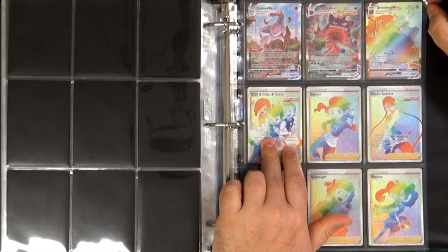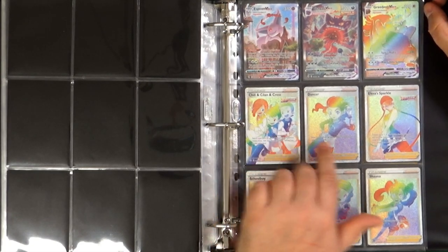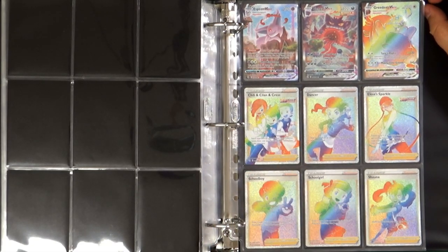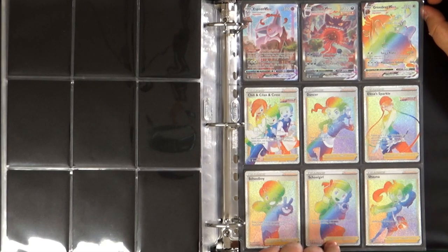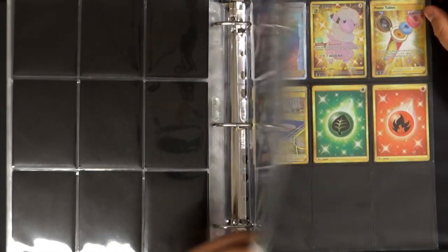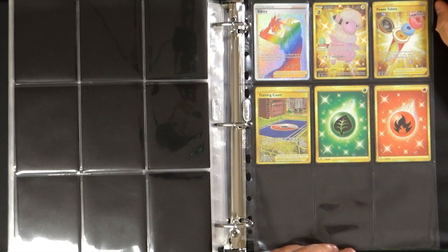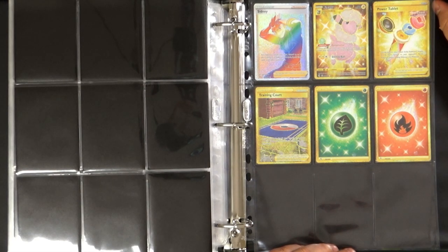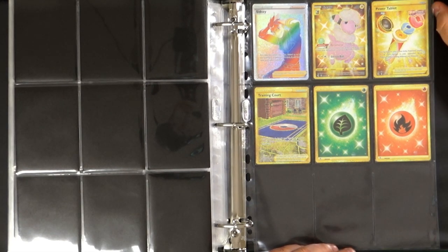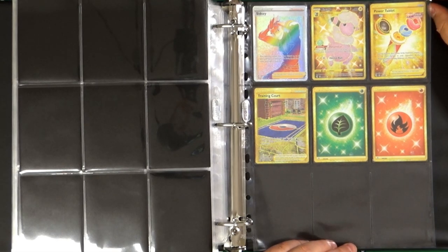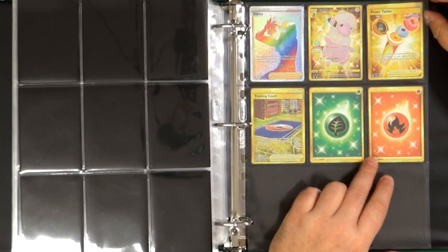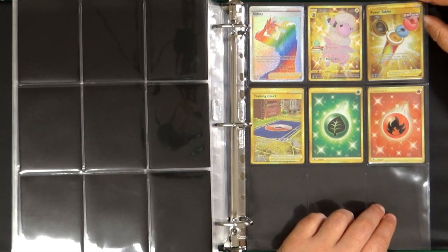Chili, Cilan and Cress Rainbow, Dancer, Elesa's Sparkle. Schoolboy, Schoolgirl, Shauna. The last six cards. Sidney, Cross Switcher Gold, Power Tablet, Training Court, and this beautiful couple of gold energy.